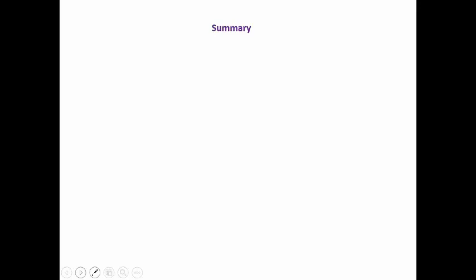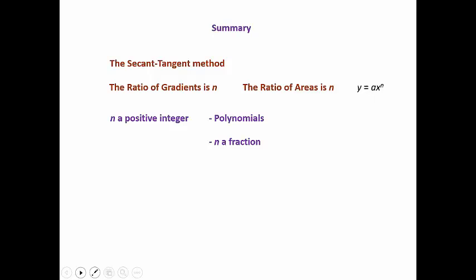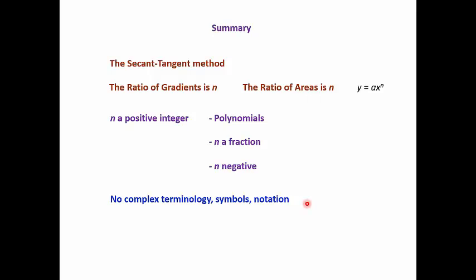To summarize: the secant-tangent method has lots of applications; from it we derive the ratio of gradients, which compares nicely with the ratio of areas for y equals x to the n. Both extend to polynomials and negative and fractional indices. Throughout all of this I have not used complex terminology — no differentiation, integration, dy/dx, delta symbols, or integral signs. It is possible to teach calculus to quite young children without confusing them with the notation and symbolism. We can also work out products, quotients, and functions of a function at this stage.